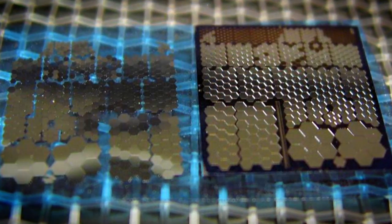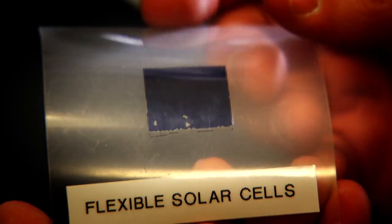We can take these small cells, release them onto a plastic substrate, and then get very high-efficiency, flexible photovoltaics.